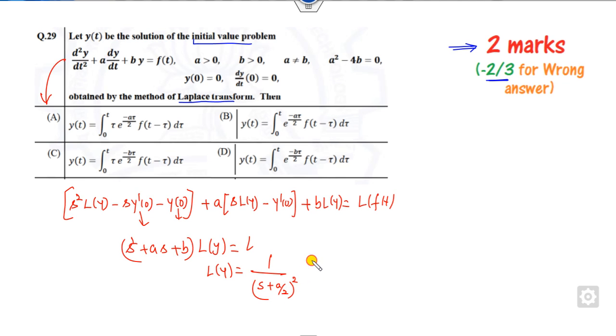I can write this quantity as s plus a/2 squared plus 0. So this is nothing but what I call f bar of t. Now how you find the value of y? It's nothing but the Laplace inverse of 1 by (s plus a/2) squared times f bar of t.